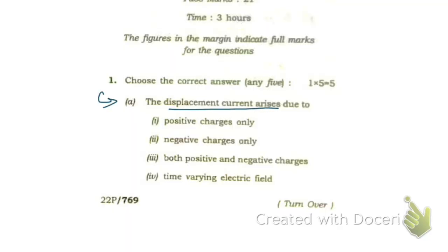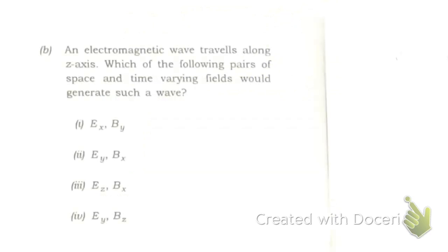The first question: displacement current arises due to — the correct answer is the fourth option: variation of electric field. Due to the variation of electric field, we get the displacement current.